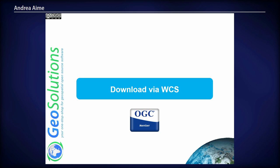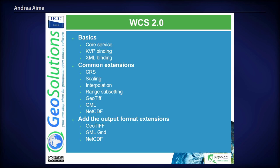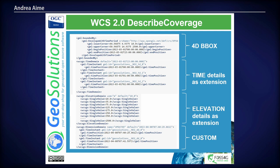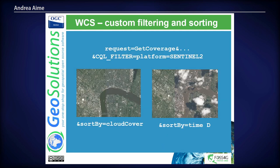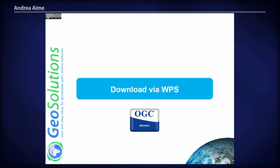If you are satisfied with the data and actually want to download it, you can use WCS — the OGC protocol for raster download. The WCS 2.0 implementation in GeoServer is complete and simple to use. In the coverage description you get all the spatial and temporal information. We added vendor extensions in GeoServer so that you can specify the same filtering and sorting applied in WMS, download that particular mosaic with those products, and get a GeoTIFF out of it. However, WCS has a limitation: requests are synchronous. So if I'm waiting half an hour, something will time out.